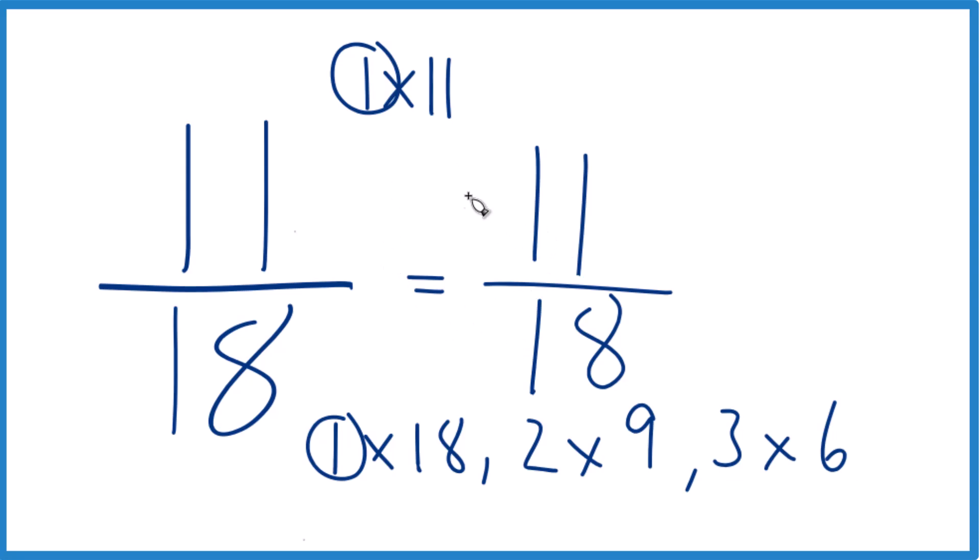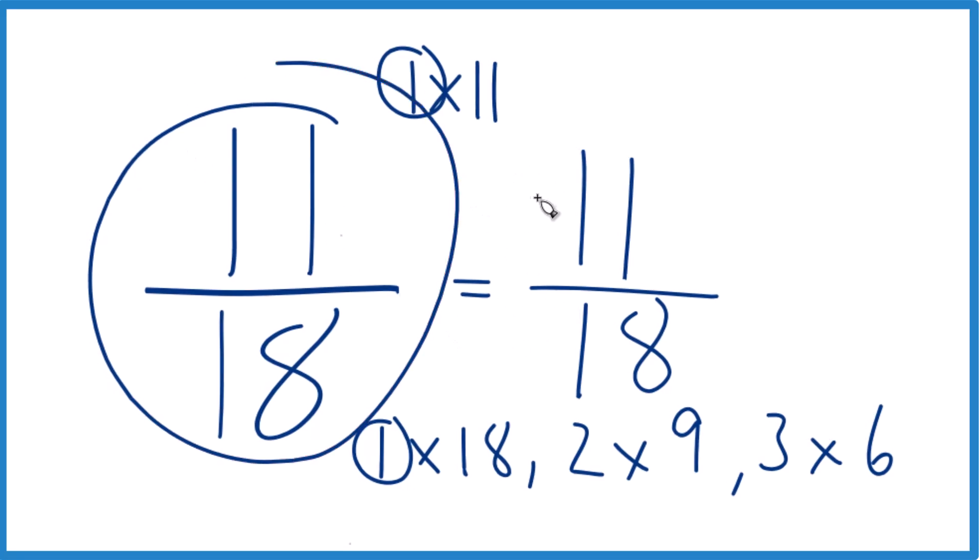So we're right back where we started. And what that means is that 11 eighteenths, this fraction right here, is already simplified. We can't reduce it any further.